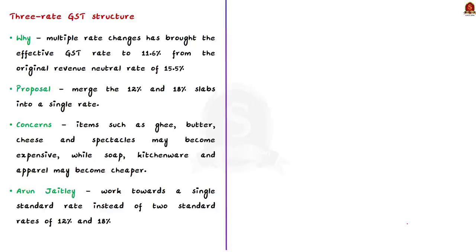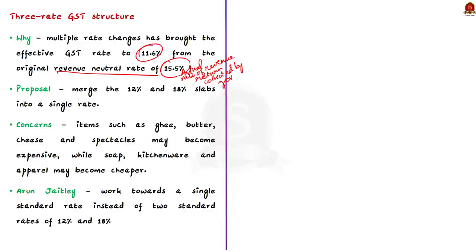According to the article, multiple rate changes since the introduction of GST have brought the effective GST rate down to 11.6% from the original revenue neutral rate of 15.5%. The revenue neutral rate is a structure of different rates established to match current revenue generation with revenue under GST — in other words, the actual rate of revenue return to be collected by the government. The effective rate of 11.6% against the neutral rate of 15.5% is causing a revenue mismatch and declining government revenue.